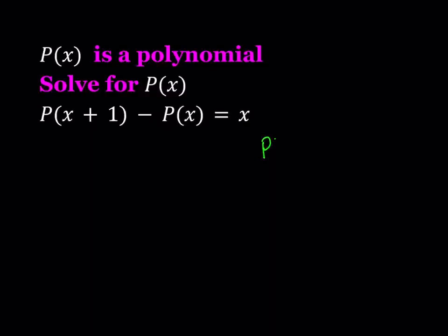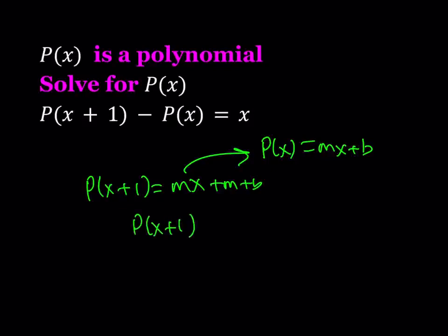For example, can P of X be something like MX plus B? I'm just testing it out. Well, in this case, I should be getting P of X plus 1 as MX plus M plus B. And if you subtract these expressions, you're going to notice that everything pretty much cancels out and you end up with the constant M. So it can't be equal to a variable. So obviously, this shows that P of X cannot be linear.